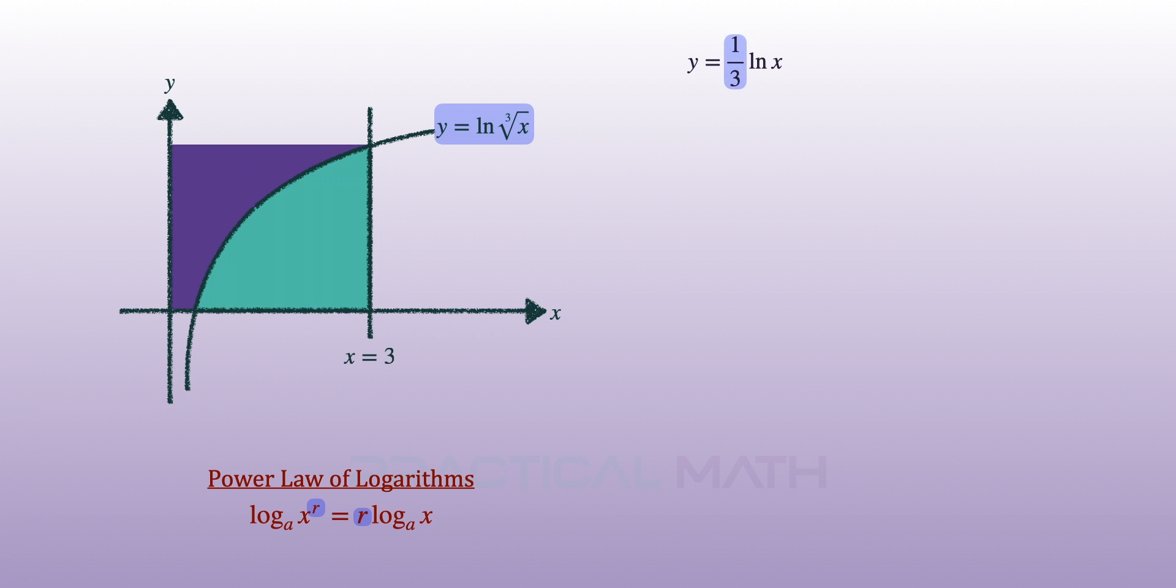In this equation, ln cube root of x is the same as ln x to the power of one-third and we can shift this power of one-third to the front.